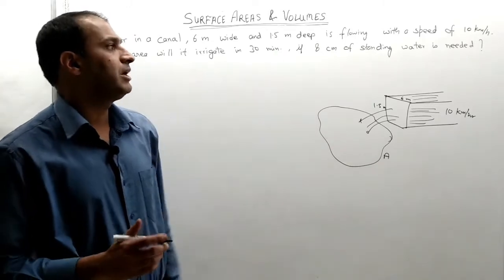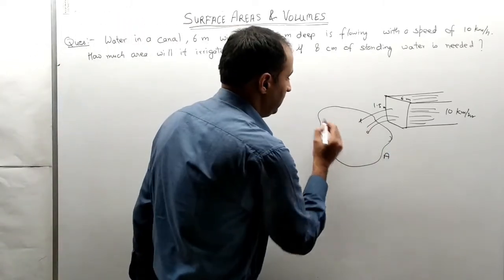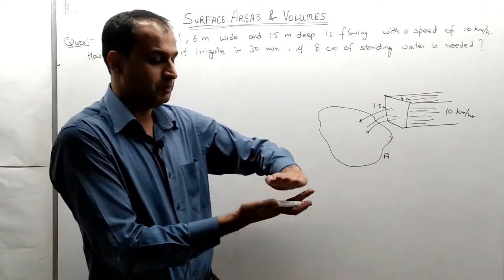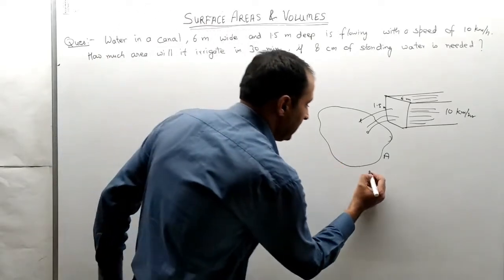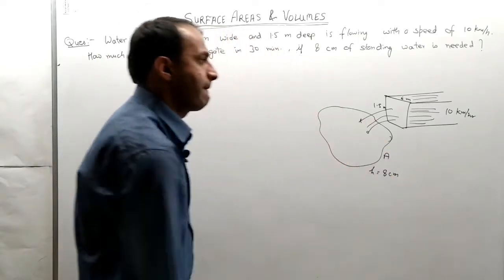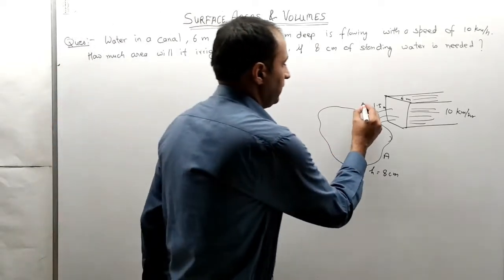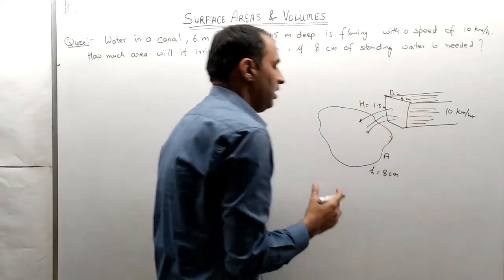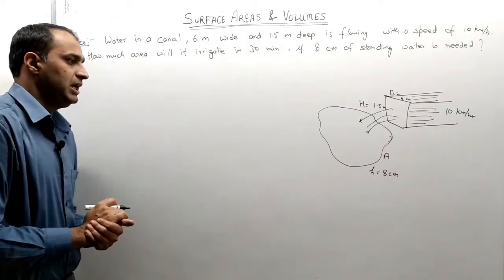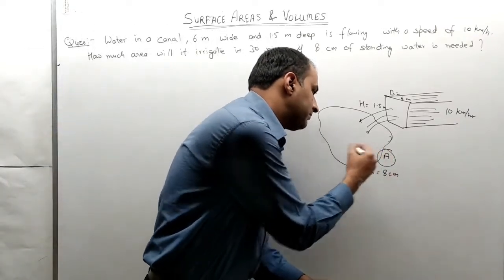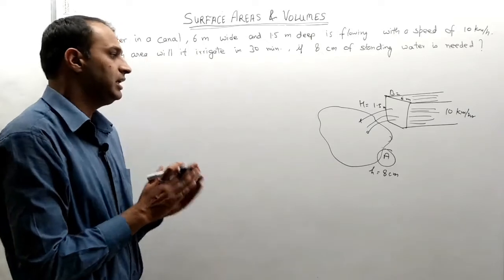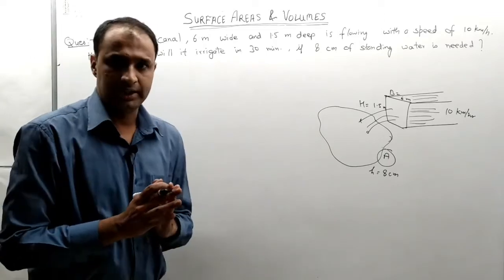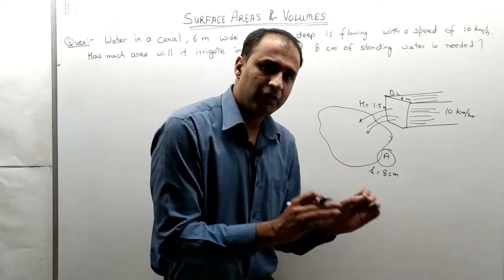If 8 cm of standing water is needed, the field will be filled. So the height of the water in the field is equal to 8 cm. We have h equal to 1.5, b equal to 6, and the height of standing water is 8 cm. Now let us find out how much volume flows.